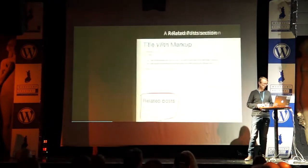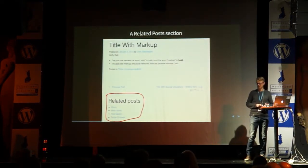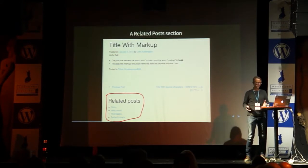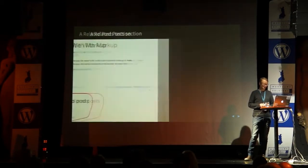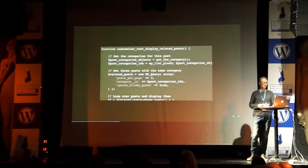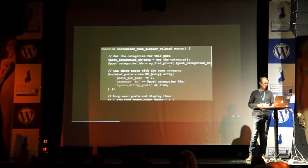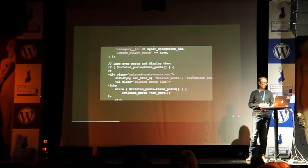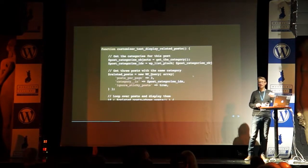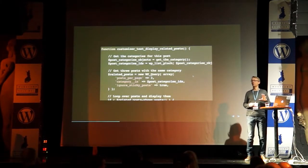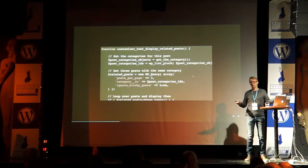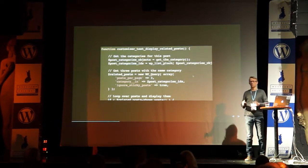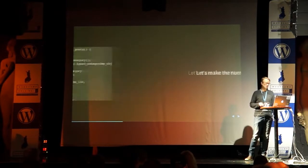Here's a more advanced example: a related posts component. I've decided to write my own related posts code because I wasn't happy with all the related posts plugins on the WordPress plugin directory. The code gets the categories for the post and displays three related posts in a loop. But I want to be able to edit the number of posts shown, because it might be appropriate on some sites to have three and on others to have 10 related posts.